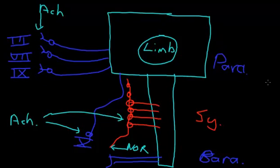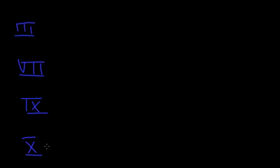Let's now take a closer look at the parasympathetic output with the cranial nerves. As we said, cranial nerves 3, 7, 9 and 10 have a parasympathetic output.